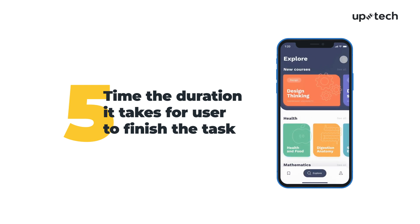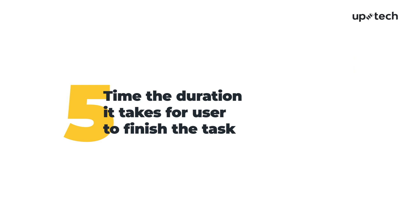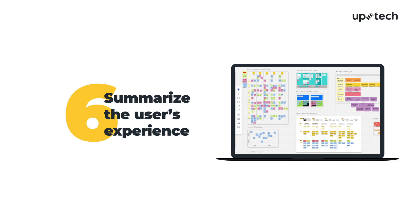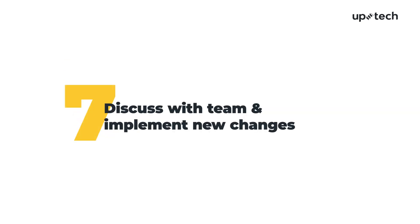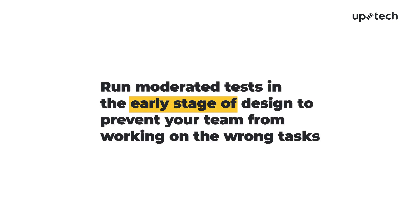We'll time the duration it takes them to finish the task. If it takes too long, or if they seem confused, we know that we've found a problem. Once the test is done, we'll summarize the user's experience of using the prototype. We'll then share the data with the rest of our team for further discussion and implementation. Remember, you'll want to run moderated tests in the early stage of design to prevent your team from working on the wrong tasks.